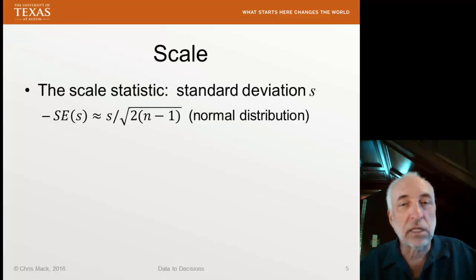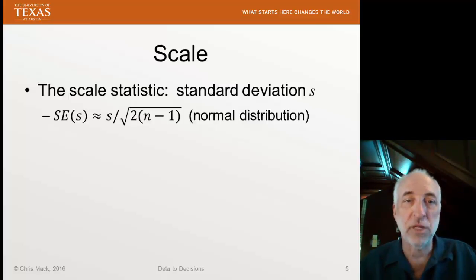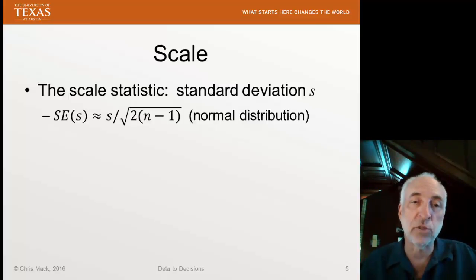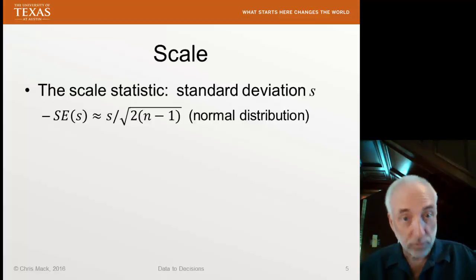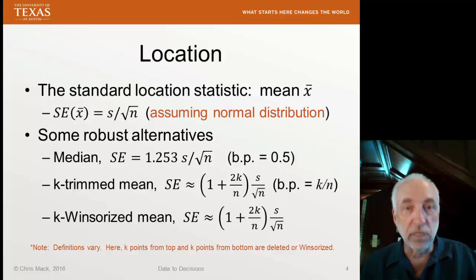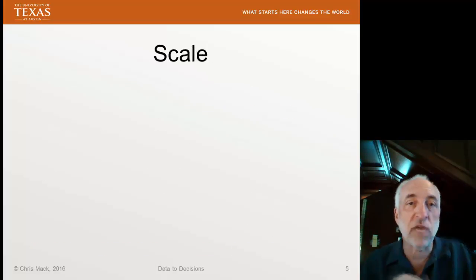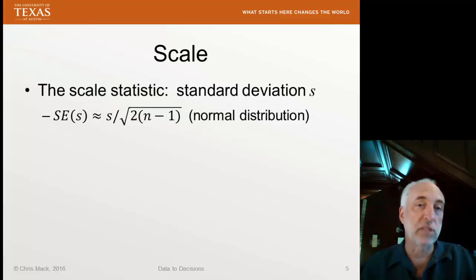What about scale? The classic scale statistic is the standard deviation. The standard error of the standard deviation equals the standard deviation divided by the square root of 2n minus 1 — approximately the square root of 2n for large n — assuming a normal distribution. What is the breakdown point for the mean and for the standard deviation? The breakdown point for the mean is one data point, so 1/n. Even one data point is enough to make the mean useless. Same for the standard deviation — its breakdown point is 1/n. One bad data point is enough to make the standard deviation go haywire.